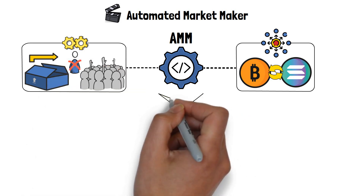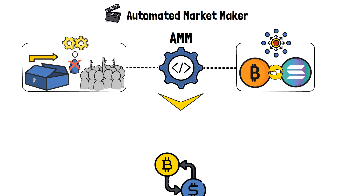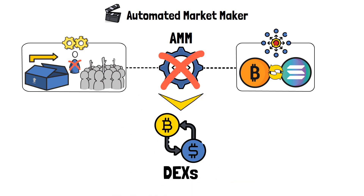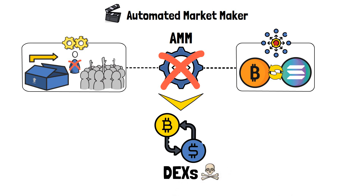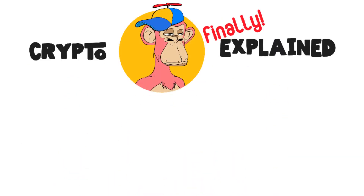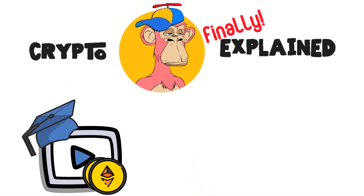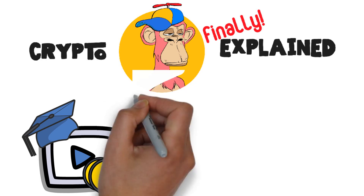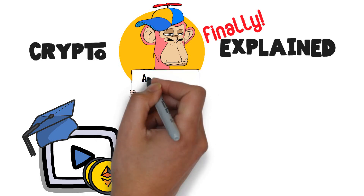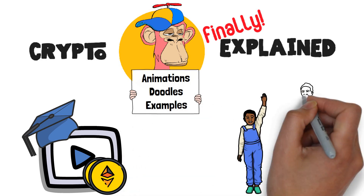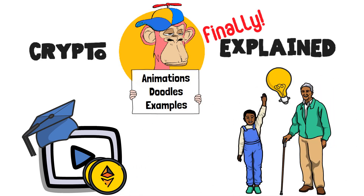Automated market makers are also one of the cornerstones of the decentralized crypto exchange industry. Without AMMs, DEXs, or decentralized exchanges, wouldn't really be able to exist and function, at least not in the way that they do now. Welcome to Crypto Finally Explained, the most crypto-friendly educational YouTube channel for actually learning crypto! Here I finally explain crypto topics using simple animations, visual doodles, and real-life examples, so no matter if you're 5 or 75, you'll be able to understand them.